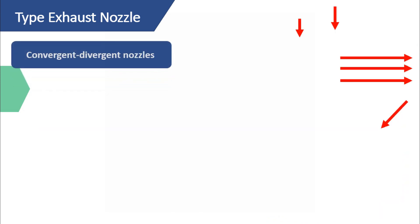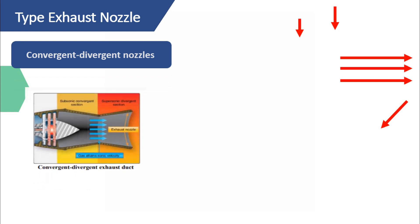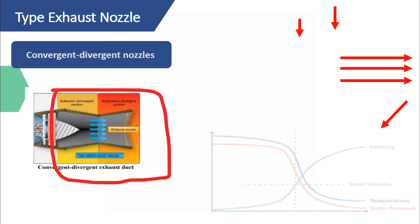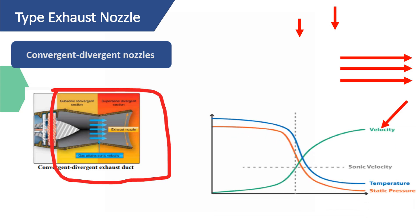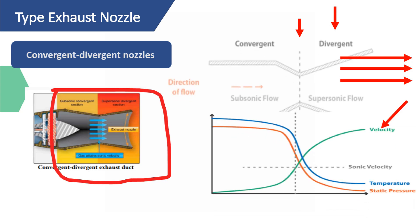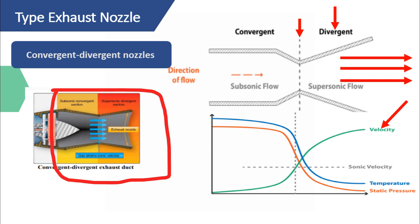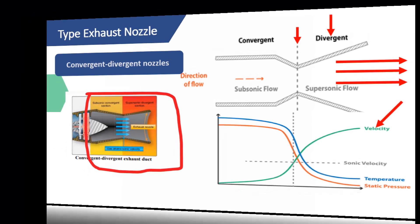Now, let's take a closer look at convergent-divergent nozzles. In these nozzles, the exhaust gases are accelerated up to the sonic point at the throat, which is the narrowest point. Beyond this throat, the gases are fully supersonic in the divergent section, right up until they exit the nozzle. This rapid expansion also creates a net thrust on the walls of the divergent section, further boosting the total thrust generated by the engine.